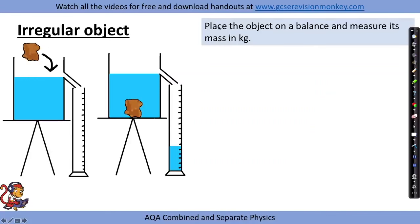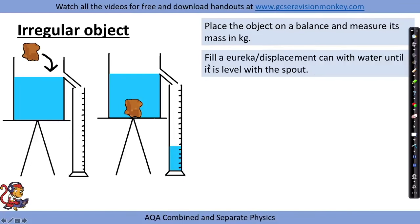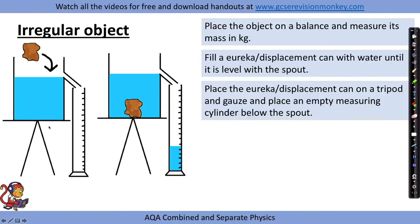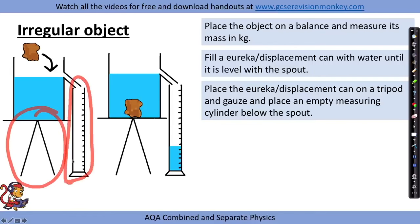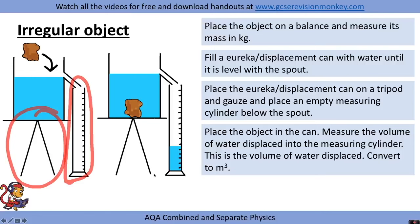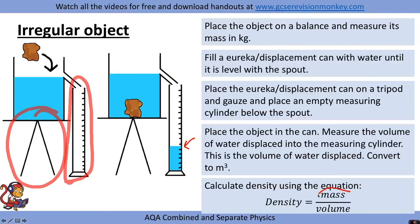For irregular objects, place the object on a balance and measure its mass in kilograms. To find volume, fill a eureka can (displacement can) with water until it is level with the spout, place it on a tripod and gauze, and position an empty measuring cylinder below the spout. Place the object in the can, measure the volume of water displaced into the measuring cylinder, and convert to metres cubed. Then divide mass by volume to calculate the density of the irregular object.